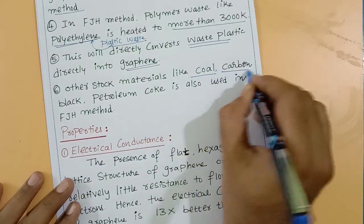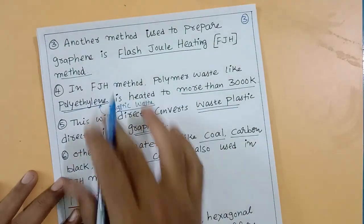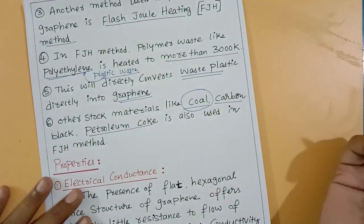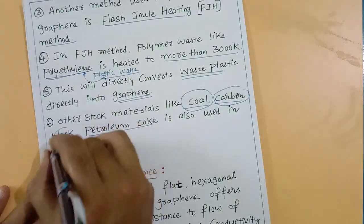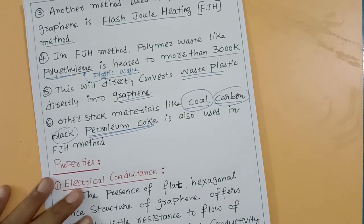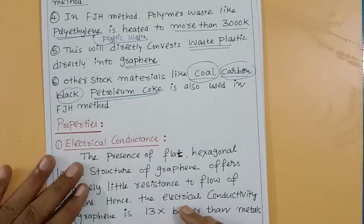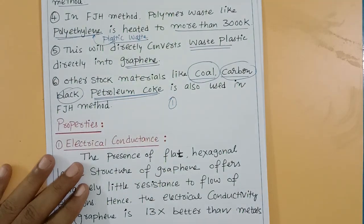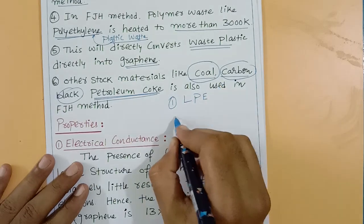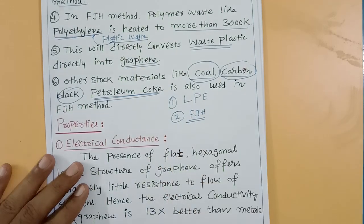Other stock materials like coal, carbon black, and petroleum coke are also used in the FJH method. These materials — plastic waste, coal, carbon black, and petroleum coke — can all be converted into graphene sheets using the Flash Joule Heating method. So graphene can be prepared by two methods: number one, LPE — liquid phase exfoliation; and number two, Flash Joule Heating, FJH. These two are the best methods available.